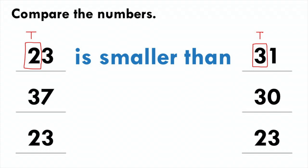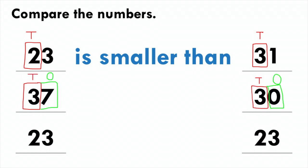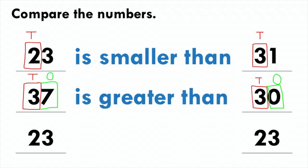Next example: 37 and 30. I am going to first look at the tens. Both numbers have 3 tens, so this doesn't tell me which number is greater or smaller, so I need to go on to look at the ones. 7 ones is greater than 0 ones, so I know that 37 is greater than 30.